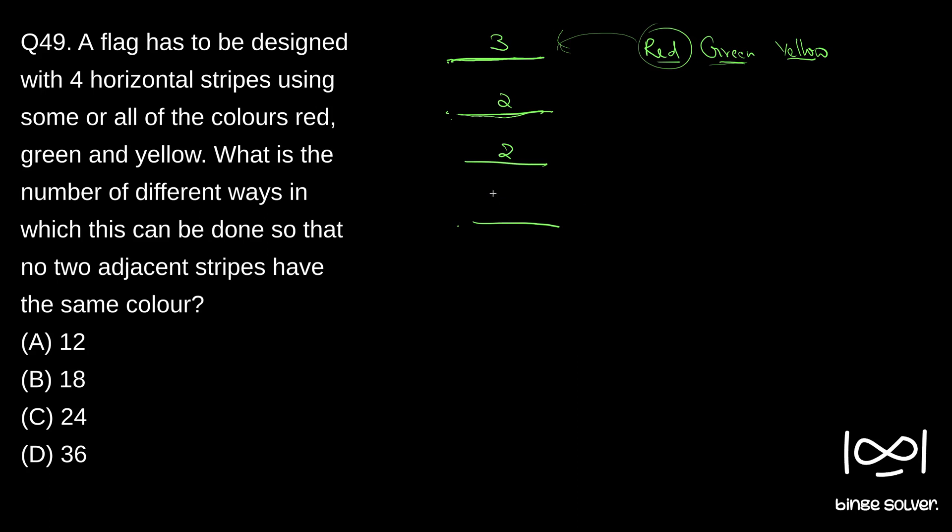Now we are going to the fourth. Again, we will be left with two choices—it should not be colored with the color that is painted here, and then we will be left with two other colors that will be painted here.